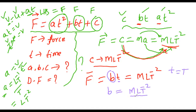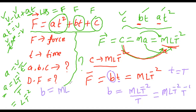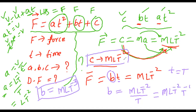Should T go to numerator or denominator? Since T is multiplying on the right, when we bring it over it goes to the denominator. So the dimensional formula of B becomes MLT⁻³. Yes, sir. Did you understand? Yes, sir. So we've found C and B. Now your job is A.